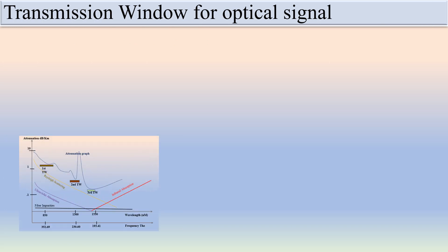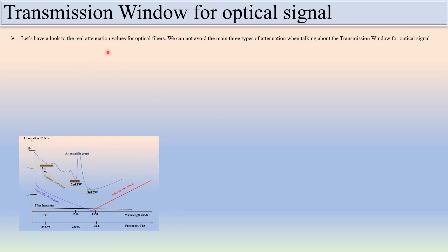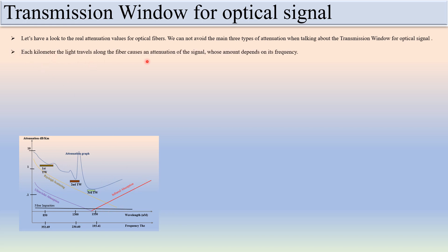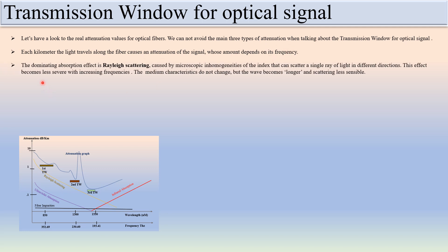So, transmission window for optical signals — let's look at the real attenuation values for optical fibers. We cannot avoid the main three types of attenuation when talking about the transmission window. These three types are: ultraviolet absorption, Rayleigh scattering, and infrared absorption. Each kilometer the light travels along the fiber causes an attenuation of the signal, and the amount depends on its frequency. The dominating absorption effect is Rayleigh scattering.